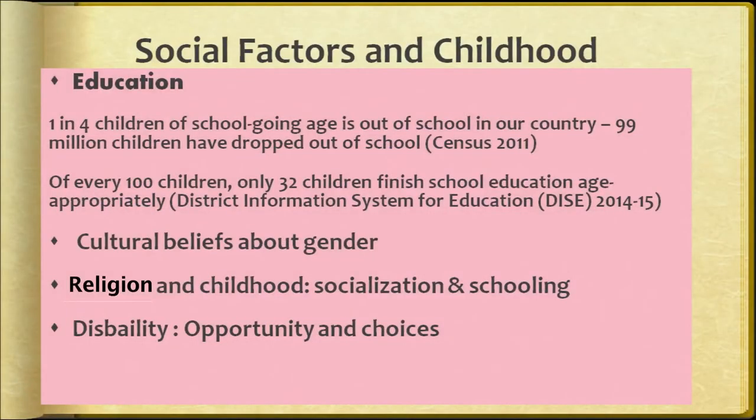We also have to look at cultural beliefs about gender, religion and childhood, socialization and schooling, disability, opportunity, and choices — these all influence children's growth. Many families and communities believe that girls should be married very early, and data tells us that quite a large number of girls under 15 are married and have a child. We have to ask whether the girl's body is ready for this. These dialogues can happen when you, working in educational settings, have conversations with parents.